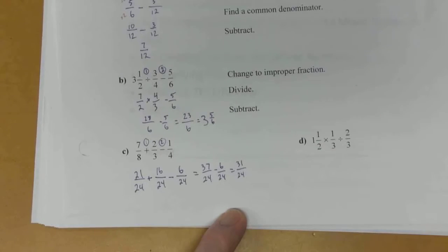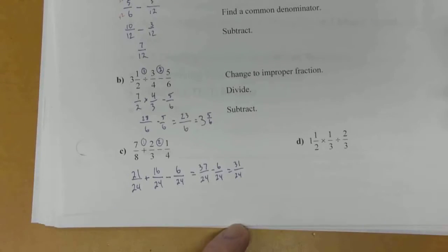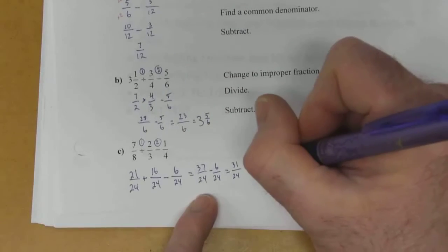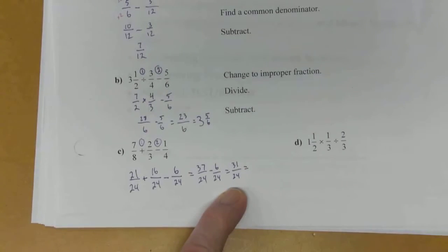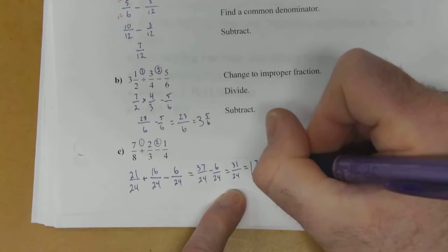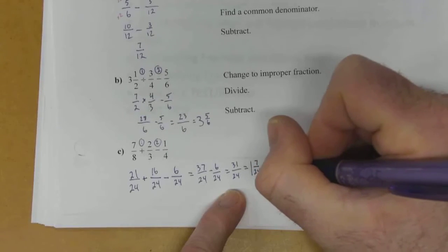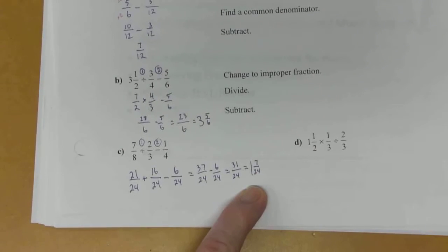But this is an improper fraction. And it's improper to leave your answer with an improper fraction. So 24 goes into 31 once with 7 remainder. So 7 goes on top and your 24 stays on the bottom. And that's your answer. 1 and 7 24ths.